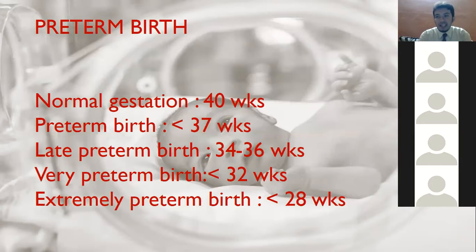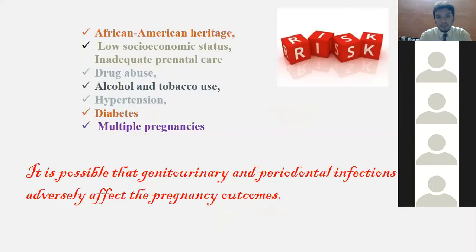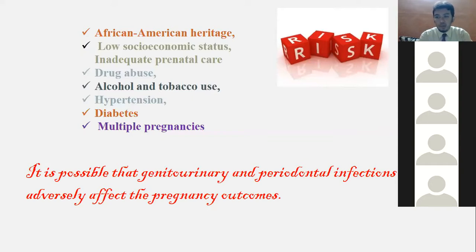Preterm low birth weight is defined as less than 36–37 weeks of gestation with less than 2.5 kg birth weight. Risk factors include African-American heritage, low socioeconomic status, inadequate prenatal care, drug abuse, alcohol and tobacco use, hypertension, diabetes, multiple pregnancies, and genital urinary and periodontal infections — all of which may adversely affect pregnancy outcomes.